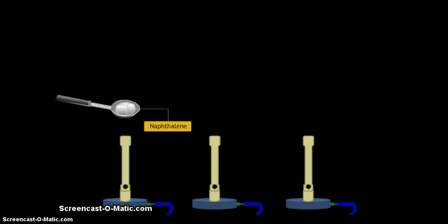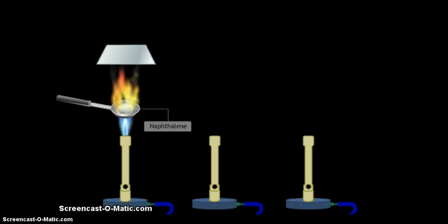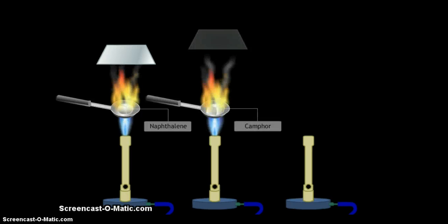Take a small amount of naphthalene on a spatula and burn it. While burning, place a metal plate above the flame.